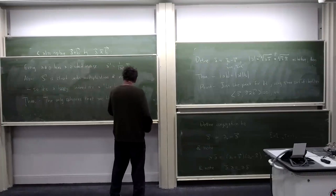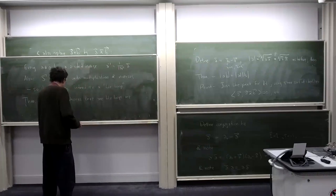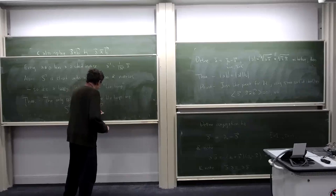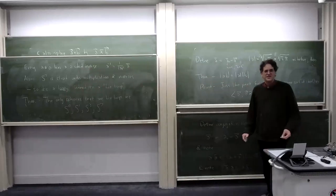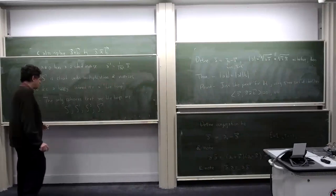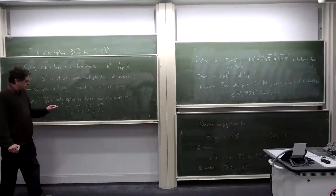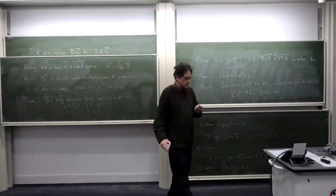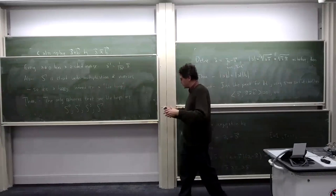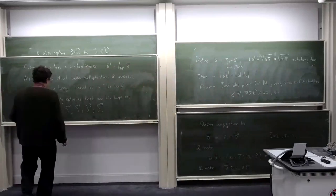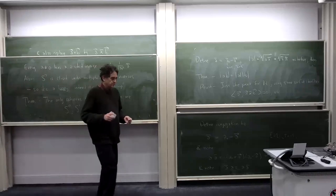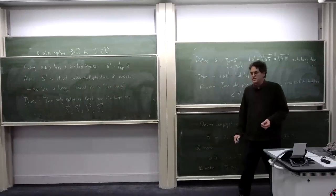One last thing: if you're into topology, some manifolds have a trivial tangent bundle — the tangent bundle is just a product of the manifold with a vector space. All Lie groups have that property, and Lie loops do too. So all these spheres — S⁰, S¹, S³, and S⁷ — have trivial tangent bundles, and they're the only spheres that do. There's a lot more to say about what you do with the octonions, but I'll stop here.